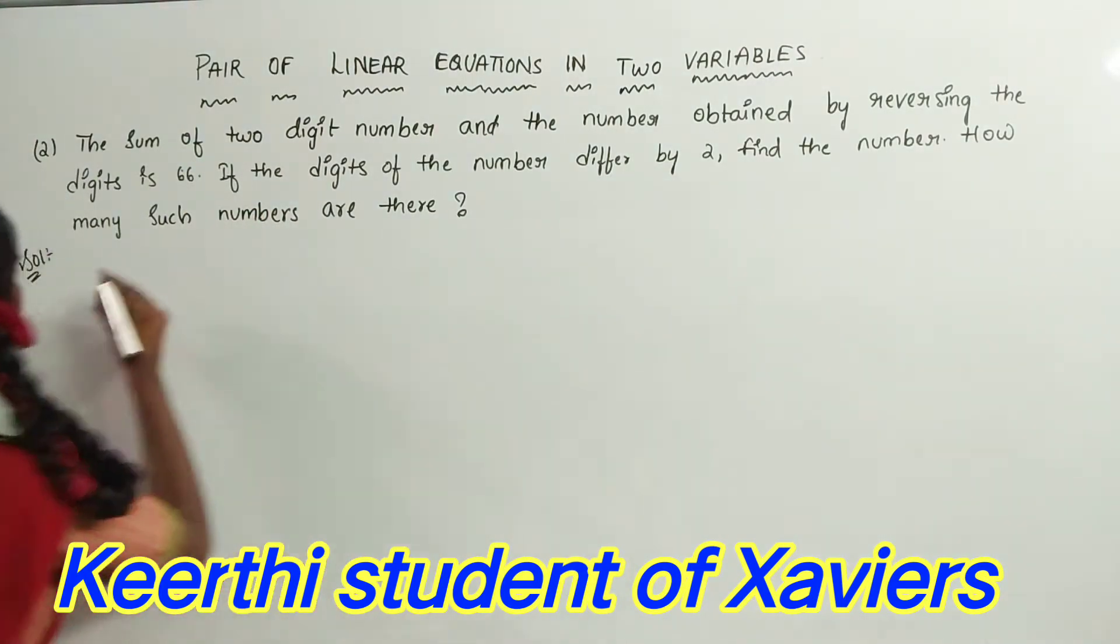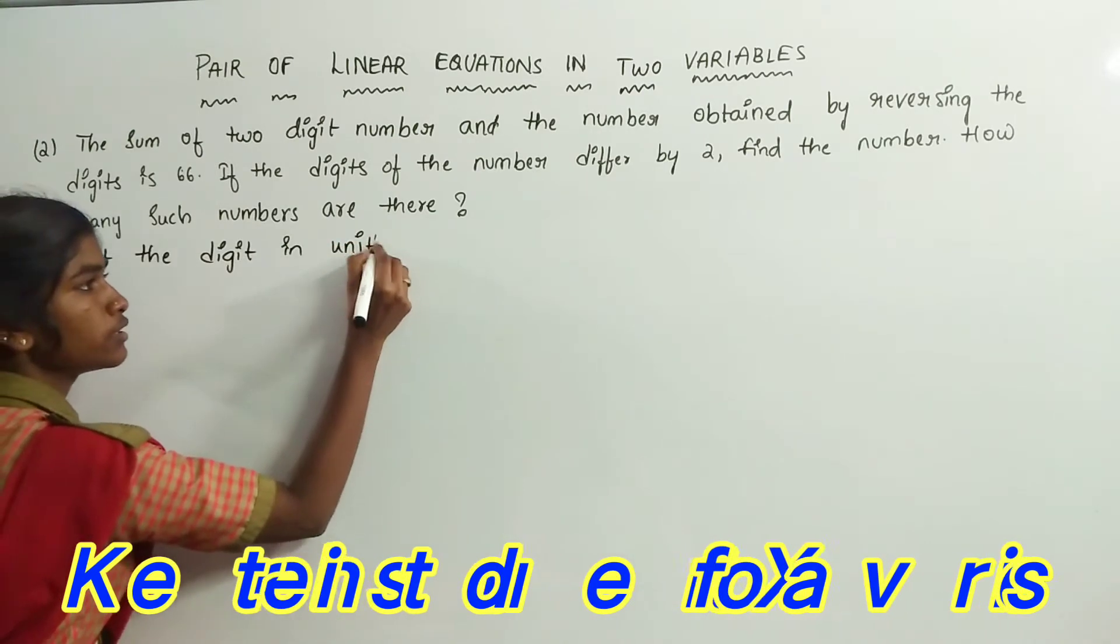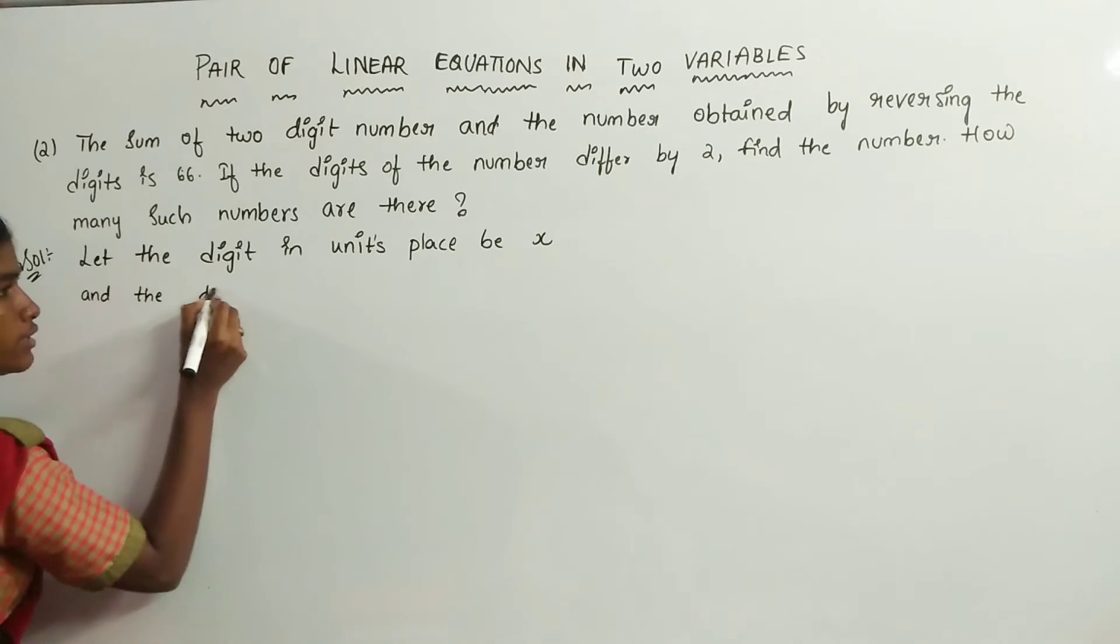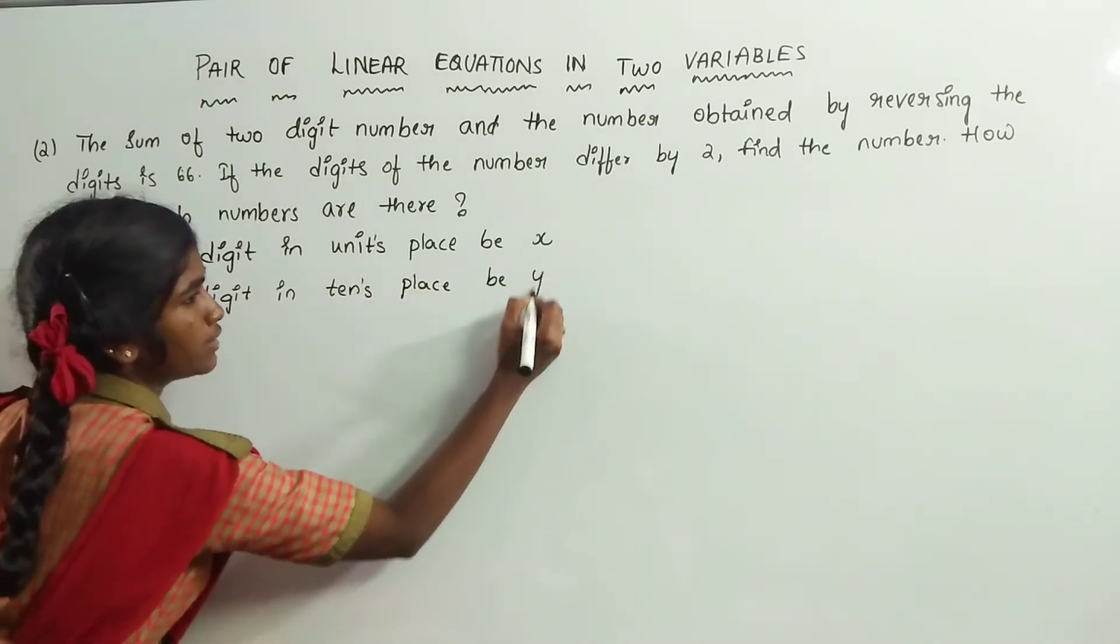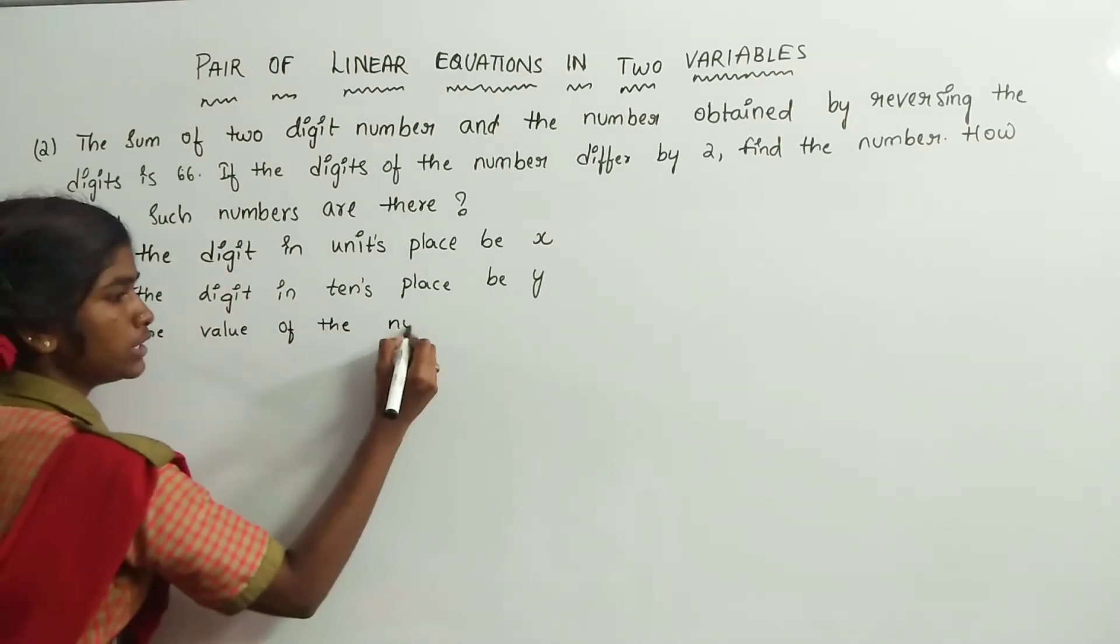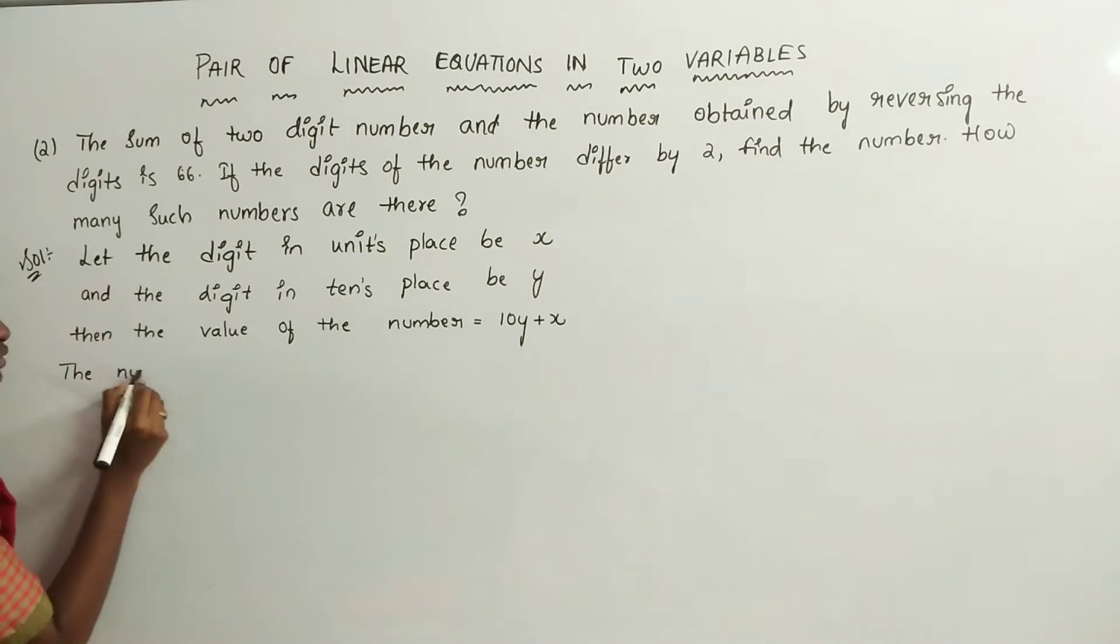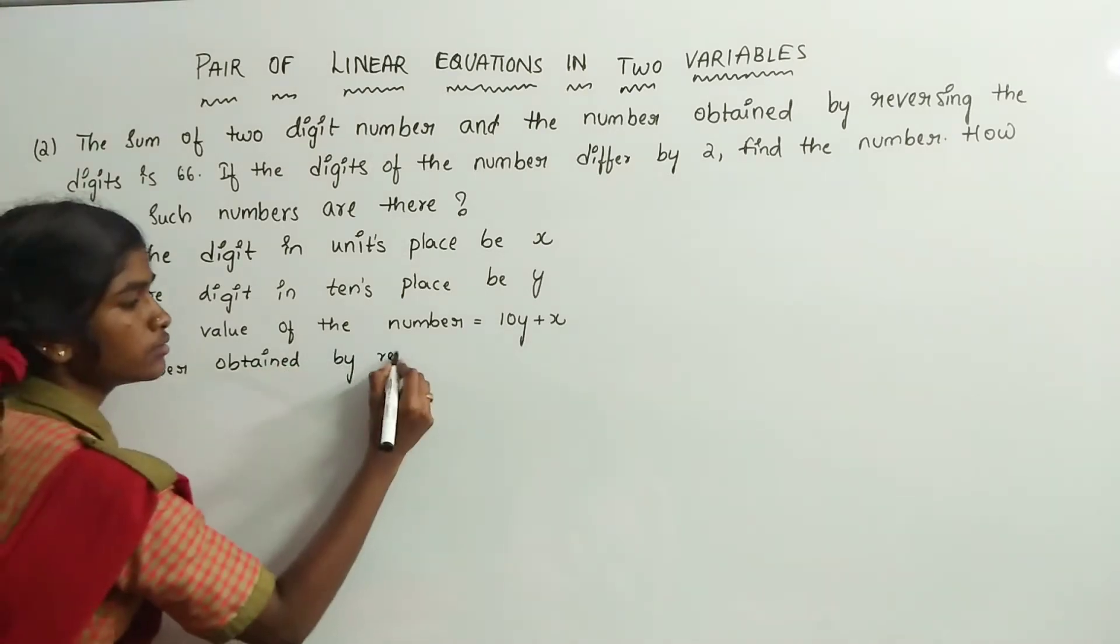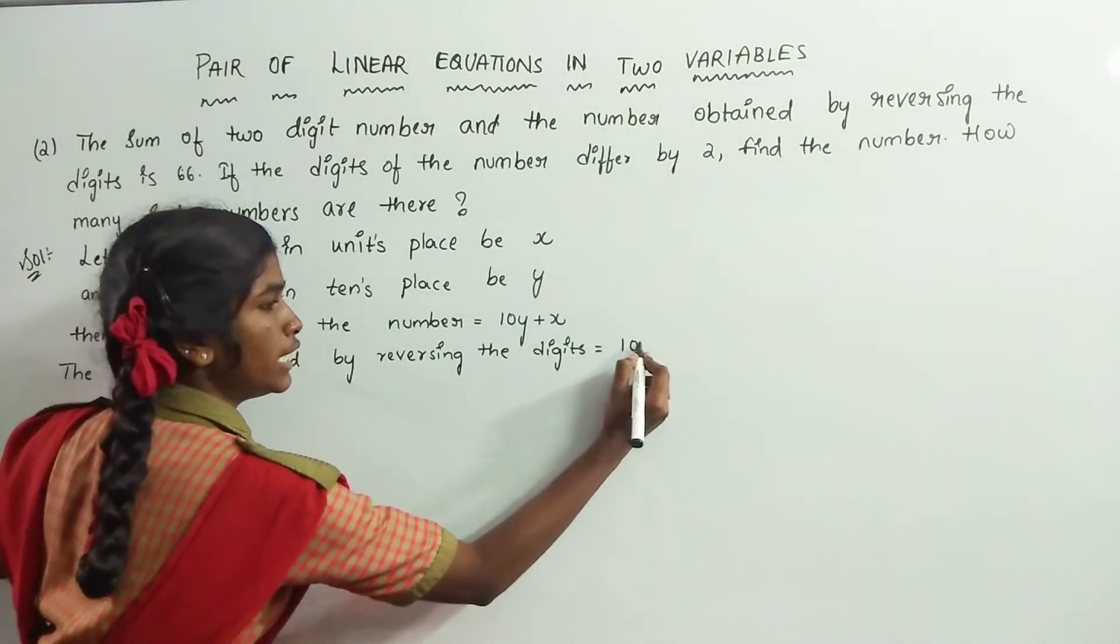Let the digit in units place be x and the digit in tens place be y. Then the value of the number is equal to 10y plus x. The number obtained by reversing the digits is equal to 10x plus y.